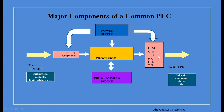The output modules will include solenoid-operated valves, contactors, alarms, motors, actuators, and hydraulic/pneumatic grippers. These will be the outputs of the PLC. According to the input given from the sensors, the program will run in the PLC and the output will be given to the output actuators.